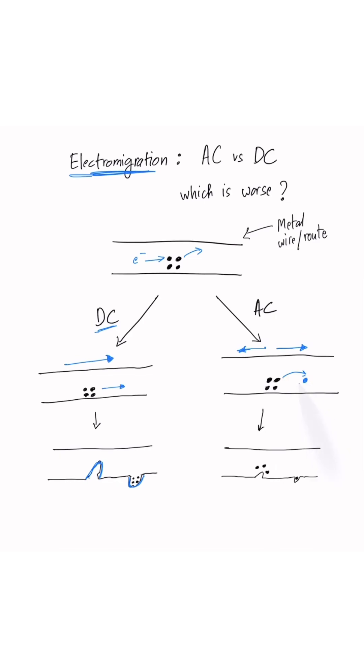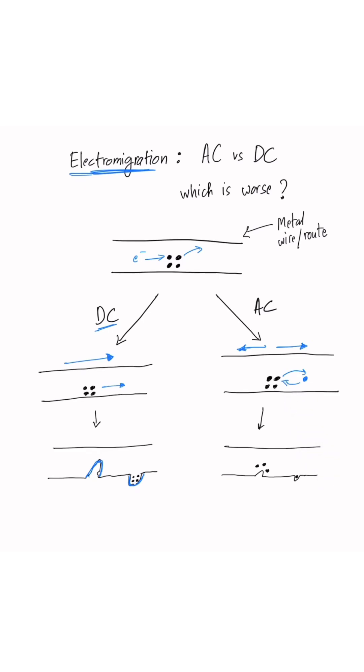in one direction can come back to its original location after some time. So in the same amount of time, much smaller voids or hills will be created in case of AC current as compared to DC current.